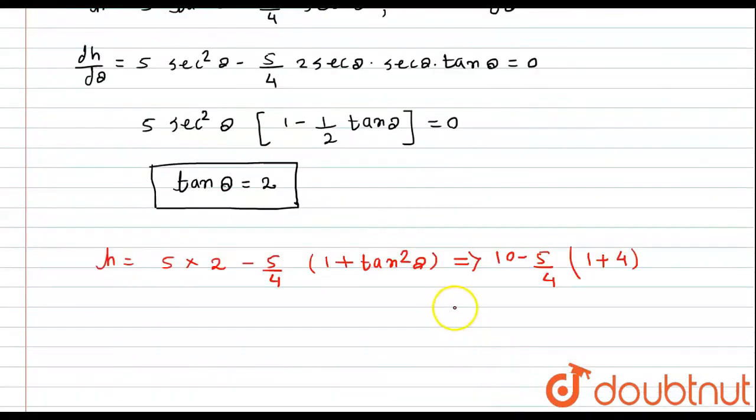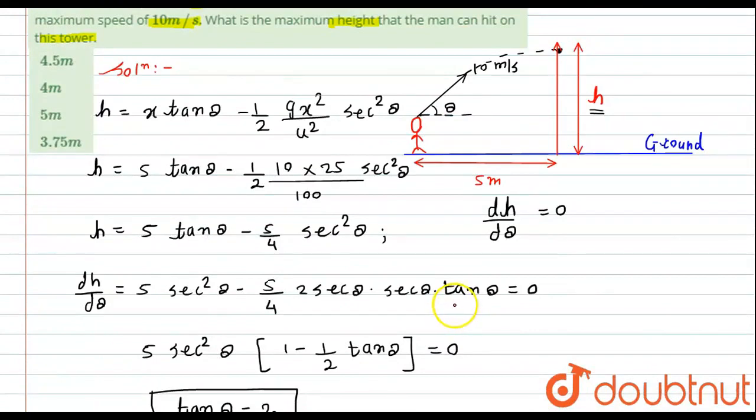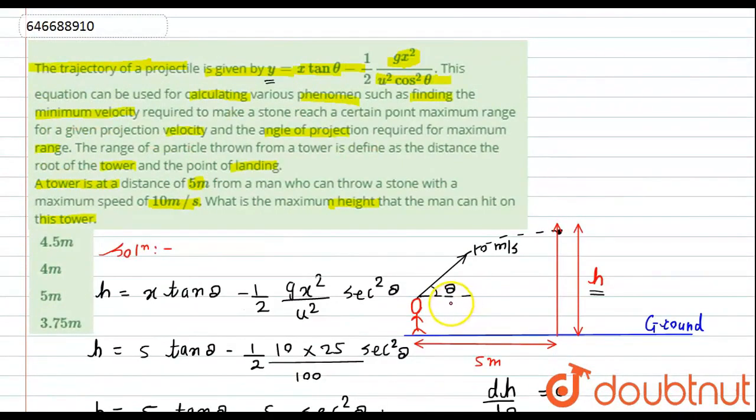This will become 10 minus 4 plus 1 will be 5, 25 divided by 4. After subtracting this, we get 3.75 meters. We can say that the maximum height at which the man can hit this tower is 3.75 meters. And according to the options, option D will become the correct answer for this question. This is the required solution. Thank you.